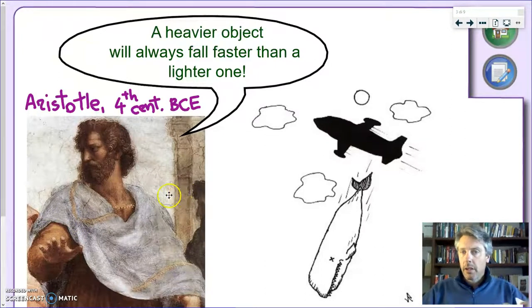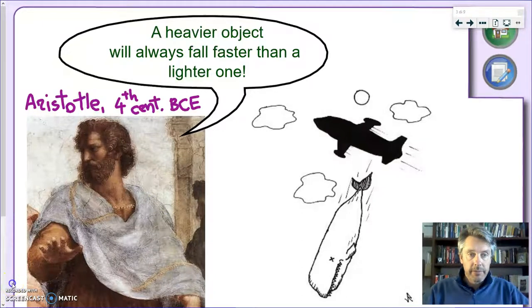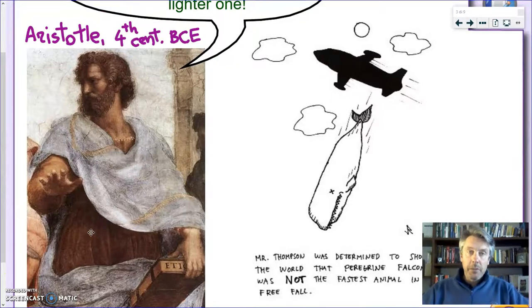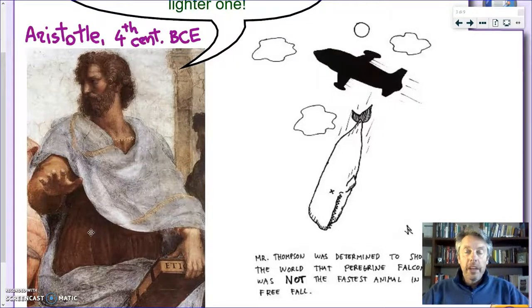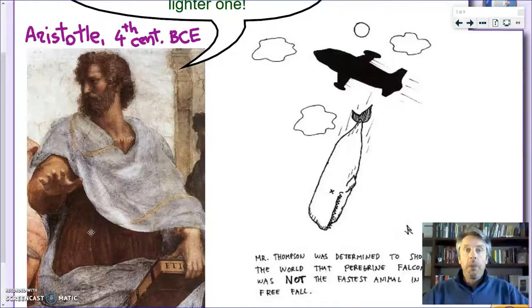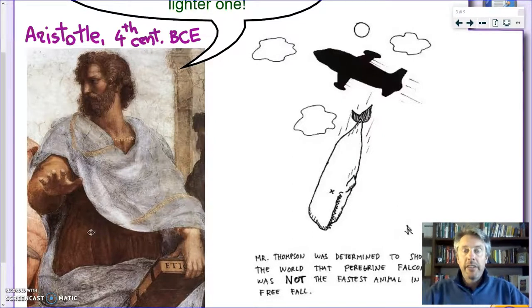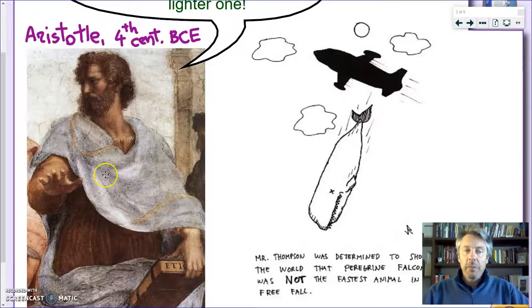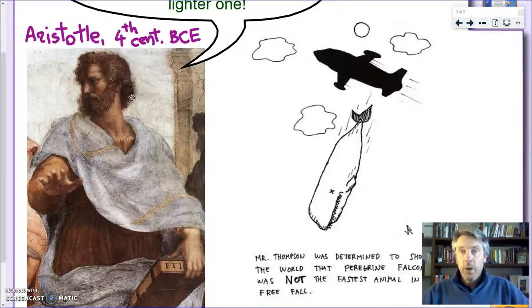But we also know something else. We also know that the fastest animal on Earth is the peregrine falcon. And the peregrine falcon can achieve a speed of more than 300 km per hour by diving. It's just going down using the force of gravity. And if you will apply Aristotle's reasoning, it will mean, what if I take a larger animal?